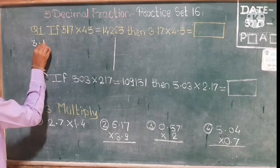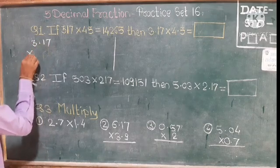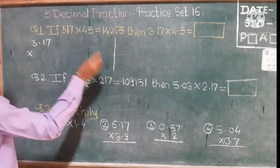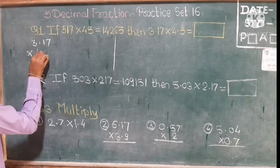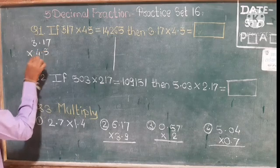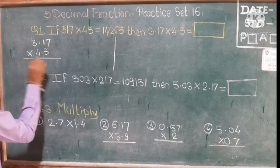3.17 multiplied by 4.5. Let us count the decimal digits.